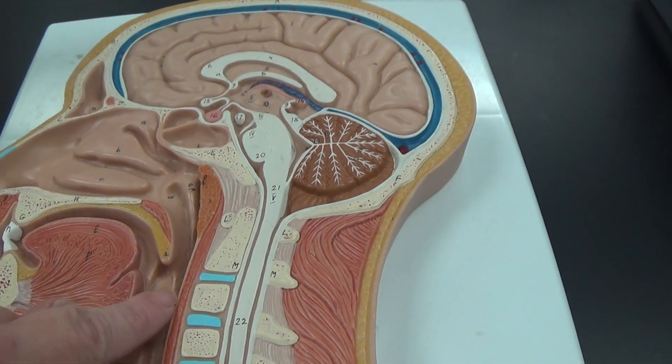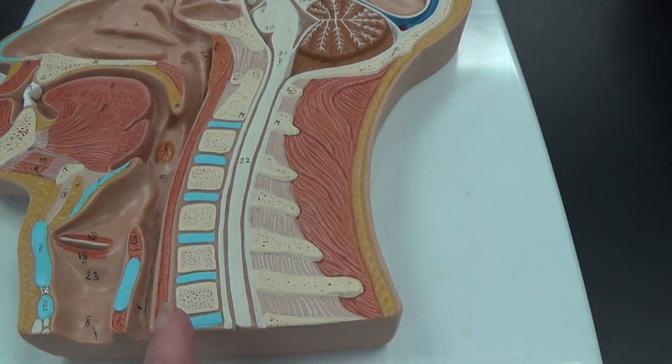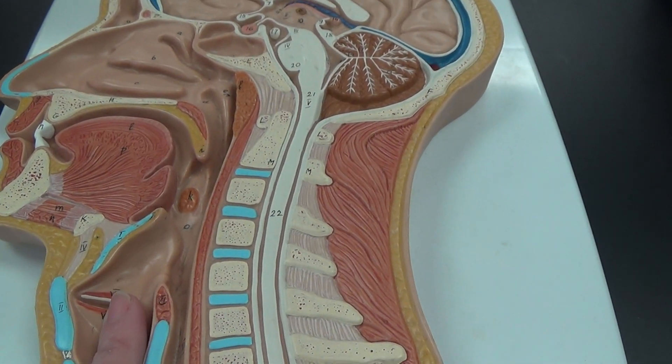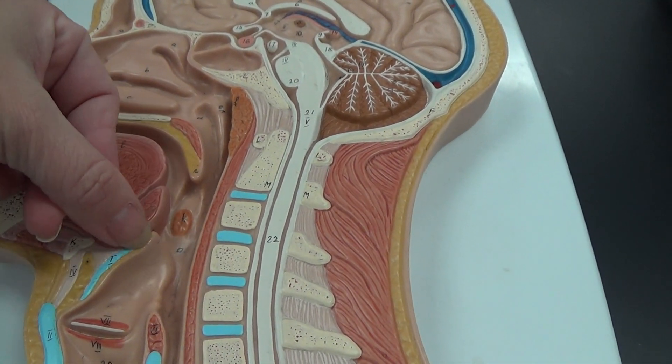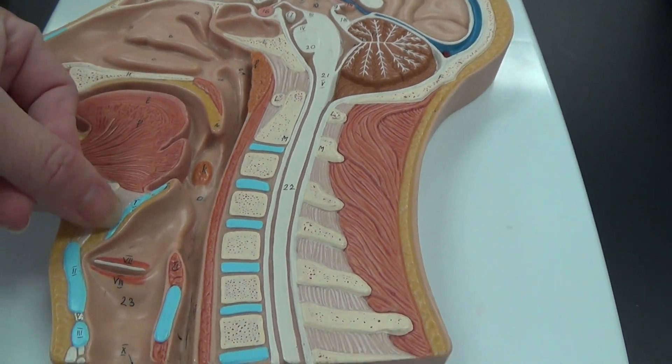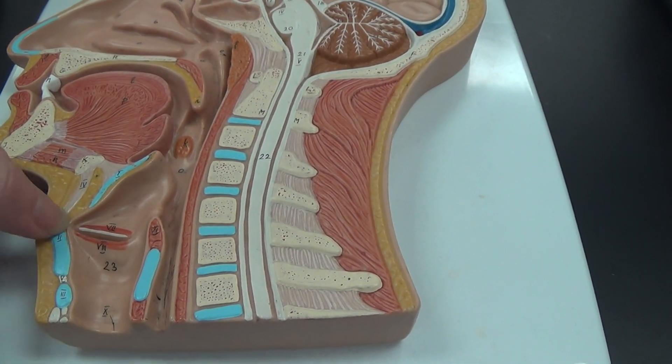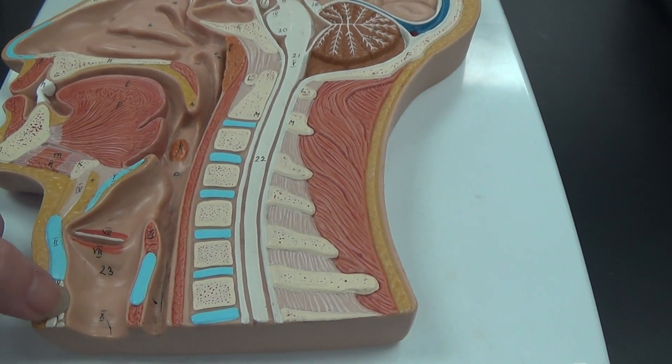We have the pharynx down here, which goes to the top of the esophagus and the trachea. This is the epiglottis in blue right here. These are cartilages as well—the thyroid cartilage and the cricoid cartilage here.